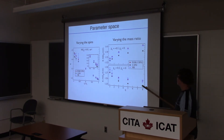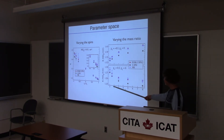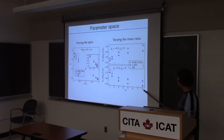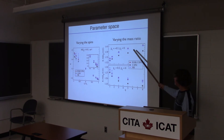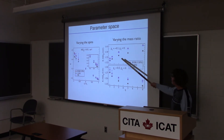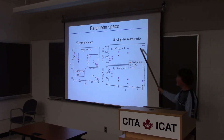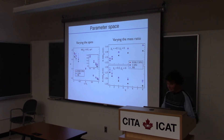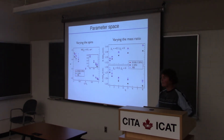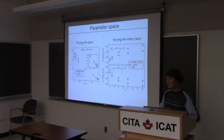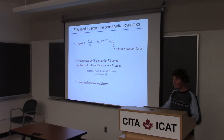For varying the mass ratio — Abdul's simulations up to mass ratio 1 to 8 — you can see again the EOB model works fairly well, whereas the post-Newtonian starts to become worse and worse. So now we know the dynamics are at least fairly well represented in this model, at least over the parameters we could test. Now how do you actually get an inspiral and a waveform out of this?